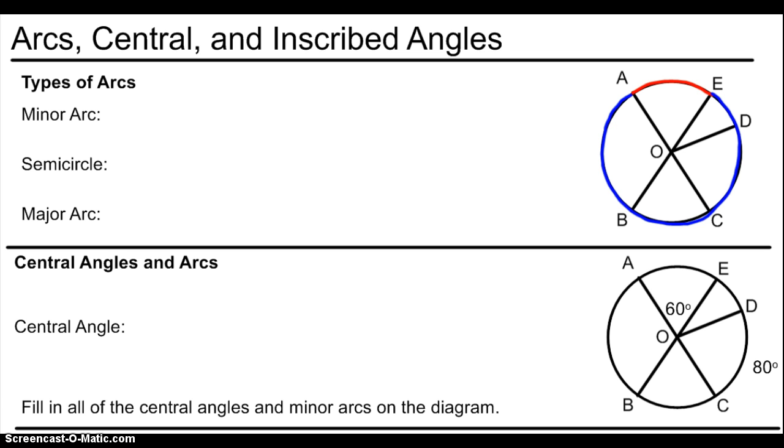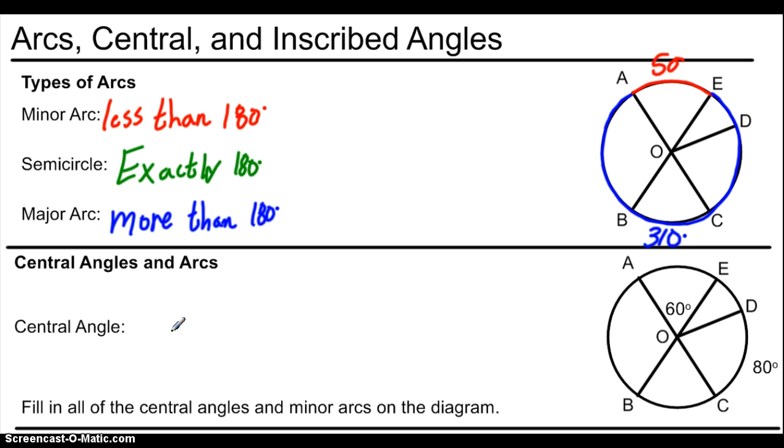So for example, this red arc from A to E could be maybe 50 degrees. And then, since the circle encompasses 360 degrees, then the blue arc would be 360 minus 50, that gives me 310 degrees. The red arc is called a minor arc, and the blue arc is called a major arc. A minor arc is any arc that encompasses less than 180 degrees. A major arc is any arc that incorporates more than 180 degrees, so it's going to be bigger.